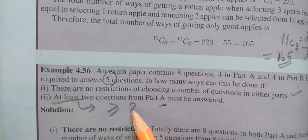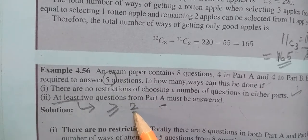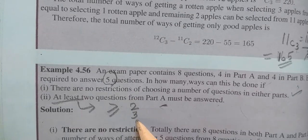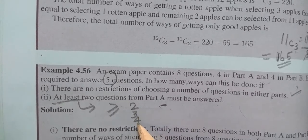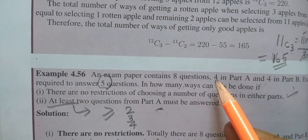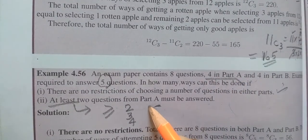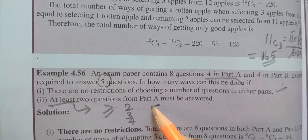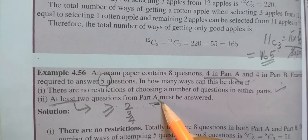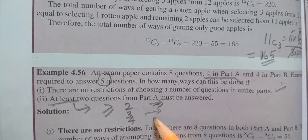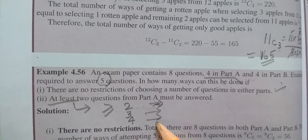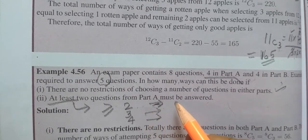Second condition: At least 2 questions from Part A must be answered. You can choose different combinations. In Part A, you have to answer at least 2 questions, and the remaining will be from Part B.